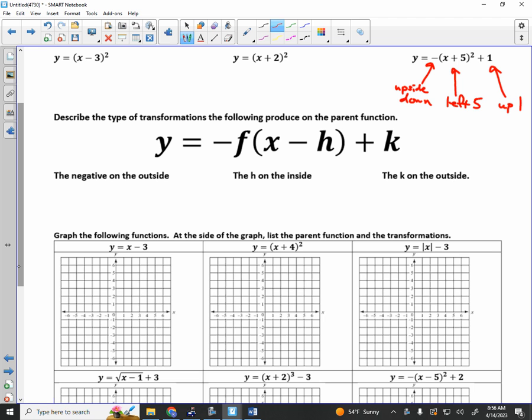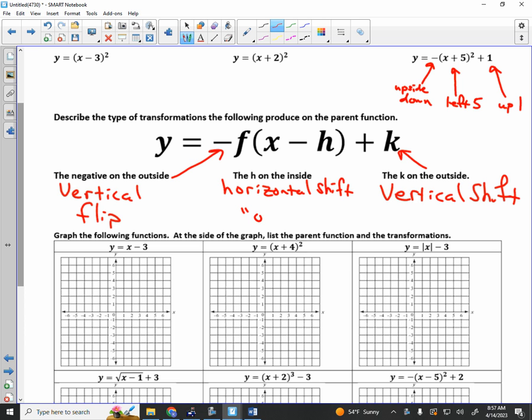If we want to summarize what these type of operations do to a function, what does the negative on the outside do? I'll write vertical flip. And then this k right here that sits on the outside of the function, that makes a vertical shift. Notice how these things that are on the outside, they impact the graph in a vertical manner. If it's on the outside, it affects it vertically. If it's on the inside, it affects it horizontally. Horizontal shift.